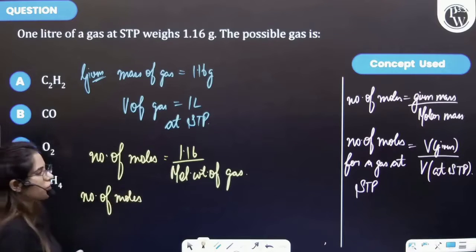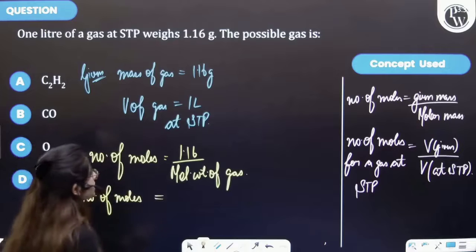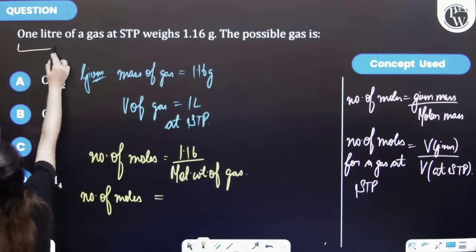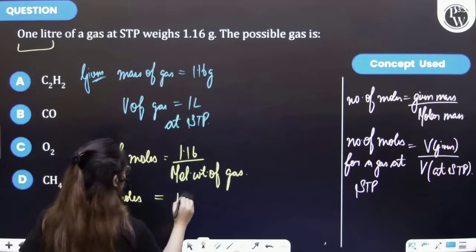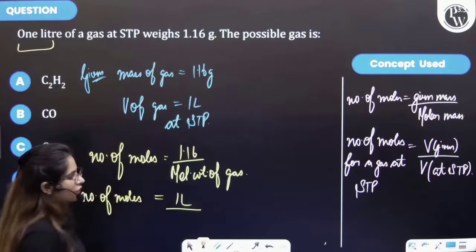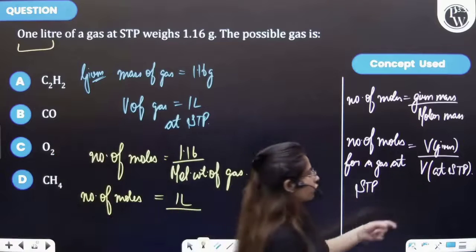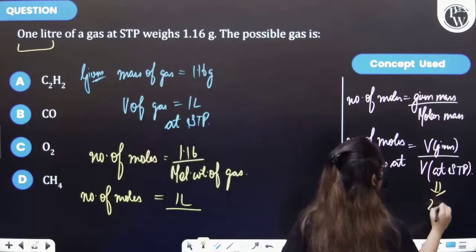In terms of the volume, volume that is given to us is one liter, and volume at STP is 22.4 liters.